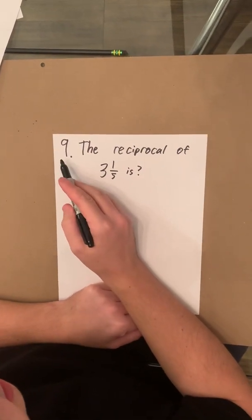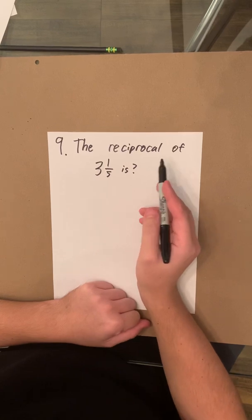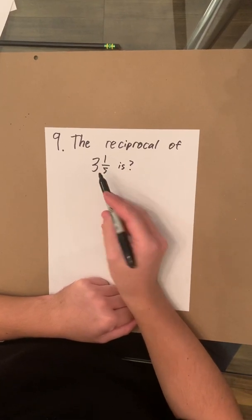All right, so for number nine it's asking us to find the reciprocal of three and one-fifth.